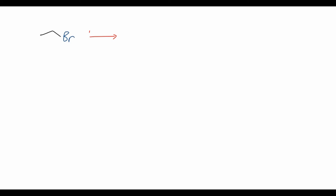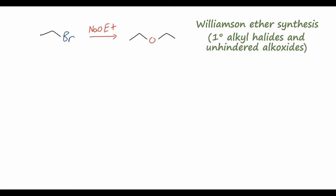We can synthesize ethers through a few different methods. One method we've already learned is via an SN2 reaction — the Williamson ether synthesis. Starting with ethyl bromide and treating it with a strong nucleophile such as sodium ethoxide, the alkoxide anion displaces the bromide in an SN2 mechanism to form diethyl ether. The Williamson ether synthesis is particularly useful for primary alkyl halides and unhindered alkoxides, because those conditions prevent elimination side reactions from occurring.